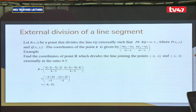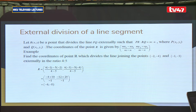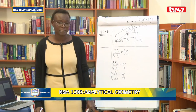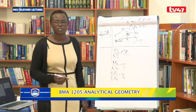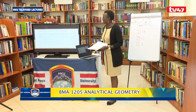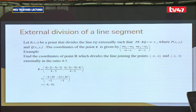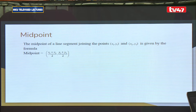Example: Find the coordinates of point R which divides the line joining (-2, -4) and (-1, -3) externally in ratio 4:5. Note that the term 'externally' can be used with ratio 4:5, or alternatively the ratio can be written as 4:-5 without the term 'externally'. Using the external division formula with m=4, n=5 gives the point as (-6, 8).